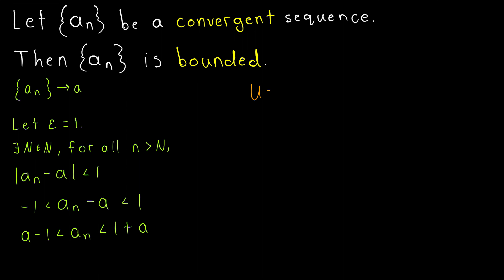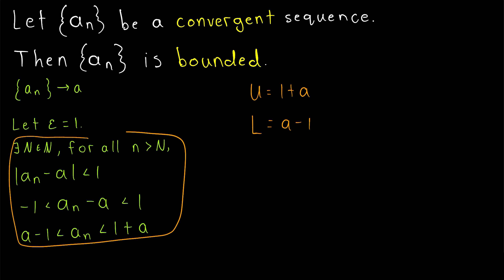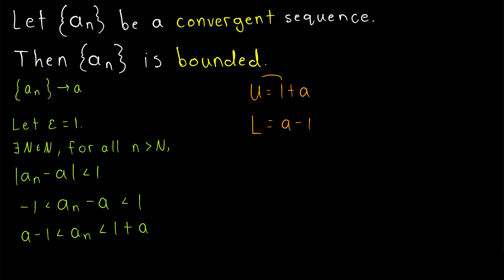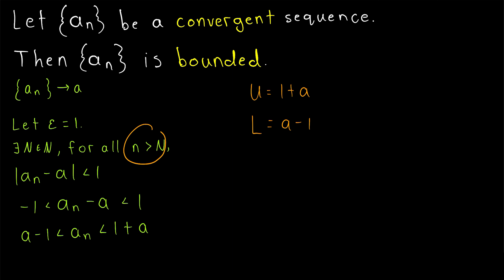We might start with a tentative upper bound u of one plus a. We know that this is an upper bound for all terms of the sequence after the big Nth term. Similarly, we might start with a tentative lower bound of a minus one for similar reasons. And again, by definition of a convergent sequence, we are sure that these bounds work for every term of the sequence after the big Nth term.